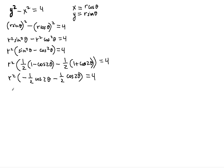Solving for r squared, we get r squared equals 4 divided by negative cosine 2 theta. The two negative one-half coefficients add to give a coefficient of negative 1, so r squared equals negative cosine 2 theta times r squared equals 4, meaning r squared equals 4 over negative cosine 2 theta.